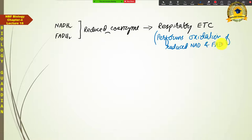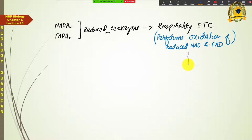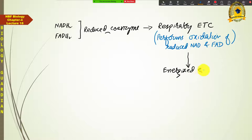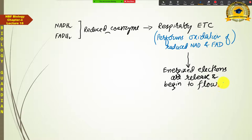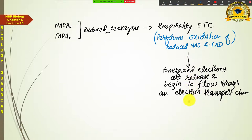During that oxidation, the energized electrons are released and begin to flow through the electron transport chain. When these energized electrons are released and their flow begins, this electron flow through the electron transport chain causes proton pumping activity through some of the electron carriers.